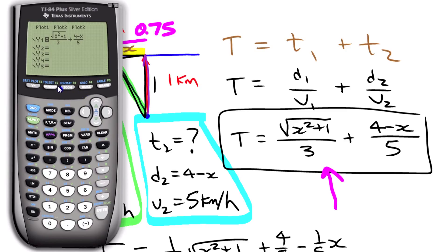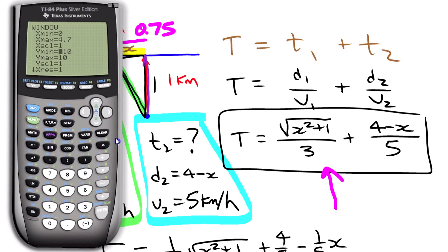I'm setting up the window to make sense for the situation. Since x is distance, it won't go beyond about four — that's the farthest down the shore you can go. I'll set the x-max to 4.7 for the calculator's pixel layout, and the y-axis represents time in hours, so I won't go into negatives and two hours should be more than enough.